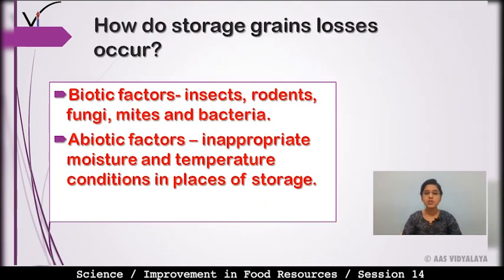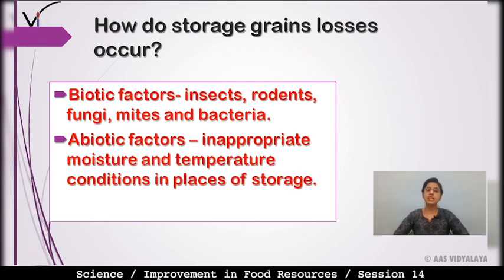The next question is: How do storage grain losses occur? Yeh biotic factors aur abiotic factors ki wajah se hota hai. Biotic factors mein insects, rodents, fungi, mites, and bacteria hain — inki wajah se grain storage mein loss hota hai.